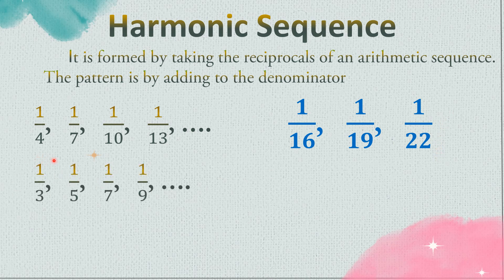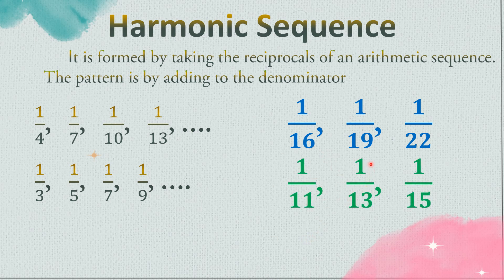Next example: 1/3, 1/5, 1/7, 1/9. The denominators are 3, 5, 7, 9 — the pattern is adding 2. So: 3 plus 2 is 5, plus 2 is 7, 7 plus 2 is 9. The next three terms after 9: 9 plus 2 is 11, 11 plus 2 is 13, 13 plus 2 is 15. So the next three terms are 1/11, 1/13, and 1/15.